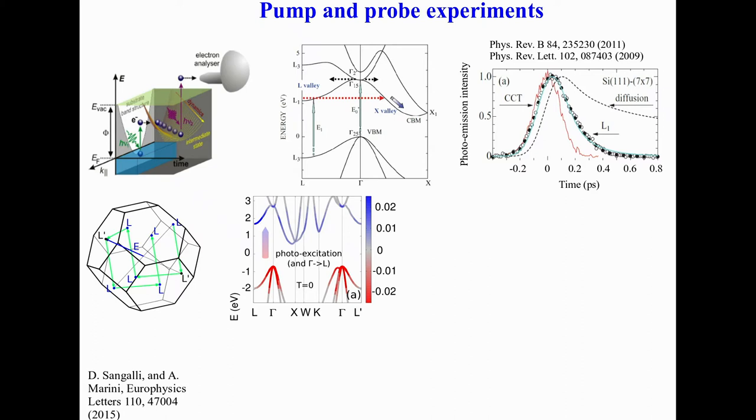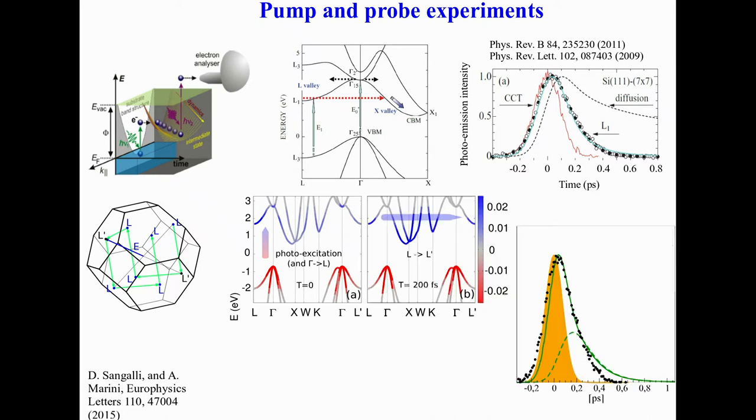After that one can imagine what happens. There are two degenerate levels, one occupied and the other not, and there is a very fast transfer of electrons from L to L prime. We did the simulation, and with that we were able to reproduce very nicely the time decay of the experiment.